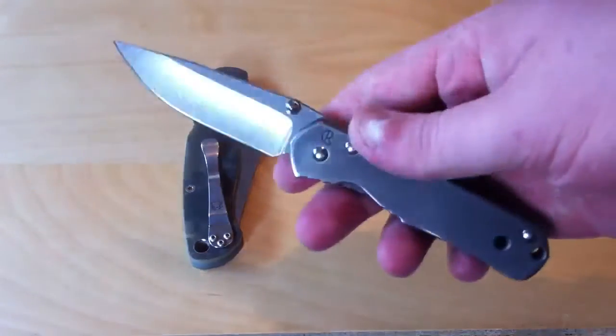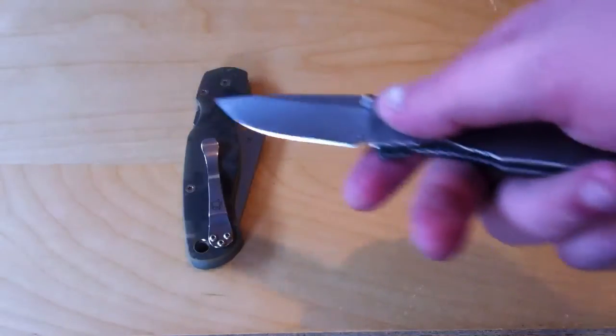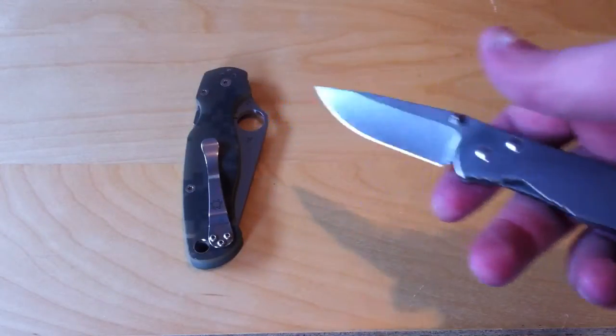Now when you have a softer steel, it won't hold its edge as well as something that's like 59 to 60, which I believe the Para 2 is at.